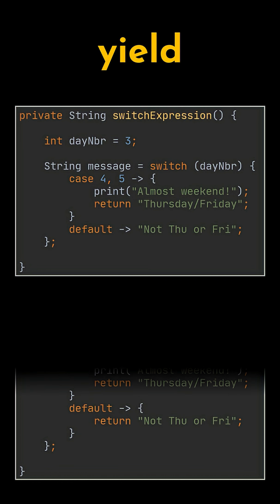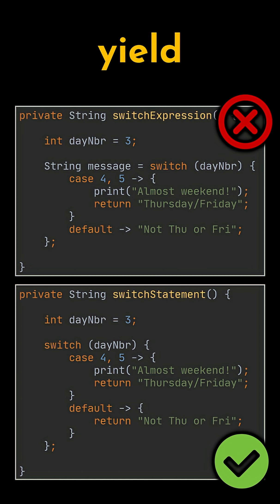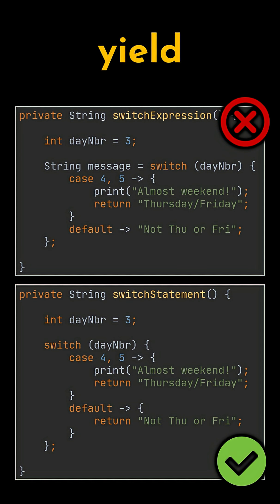It's important to note that we cannot use return directly from inside a switch expression. Trying to do so will result in a compilation error. While traditional switch statements allow returning from within, switch expressions require us to use yield to output the desired value.